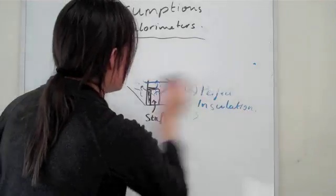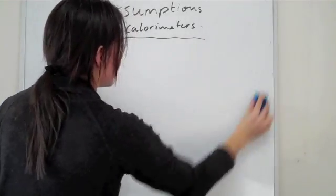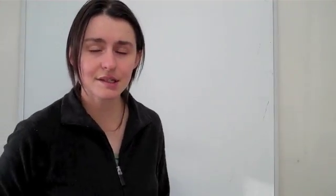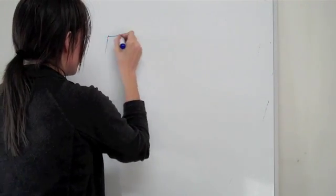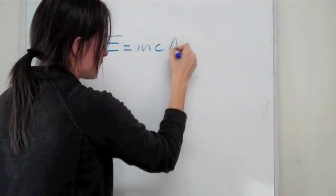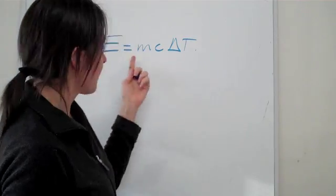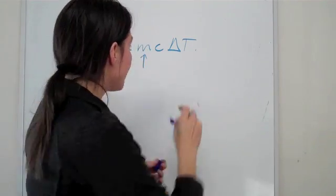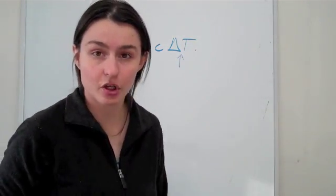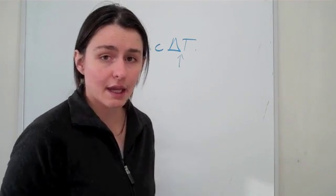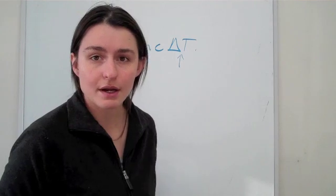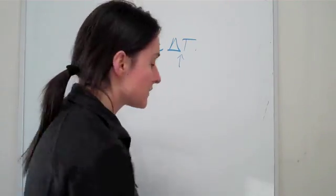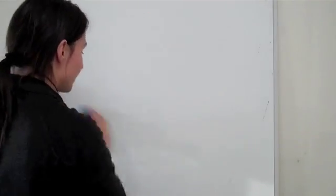The next thing I wanted to go through with you is this concept of calibrating a calorimeter. In the last tutorial we discussed energy and the equation: energy equals mc times change in temperature. I told you that if you know the mass of the water in the calorimeter you can figure out the energy delivered just by finding the change in temperature. But there's a catch — sometimes you do not know the mass of your water or how much volume you have in your calorimeter.